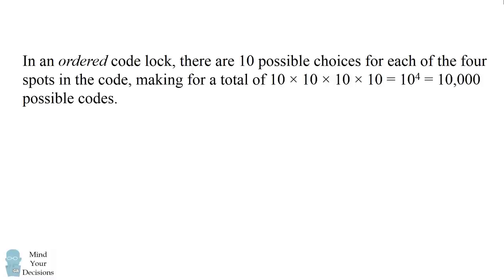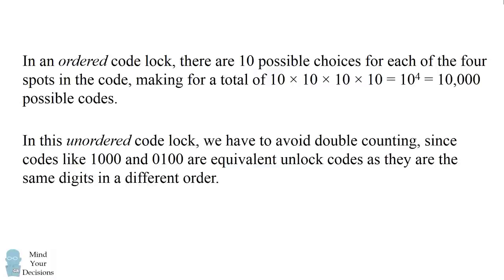In an ordered code lock, there are 10 possible choices for each of the four spots in the code, making for a total of 10 to the power of 4, or 10,000 possible codes. In this unordered code lock, we have to avoid double counting, since codes like 1 0 0 0 and 0 1 0 0 are equivalent unlock codes, as they are the same digits in a different order.